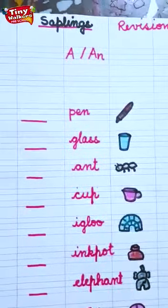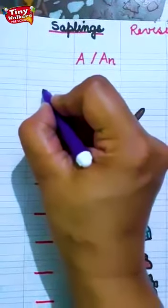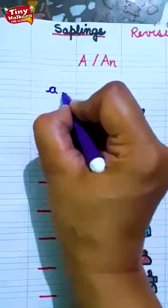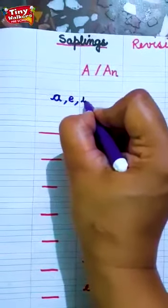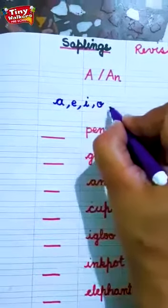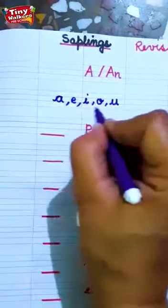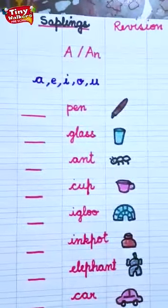Name them. Jaldi se naam batao. Let us write A, E, I, O, U. A, E, I, O, U. These are the five vowels.